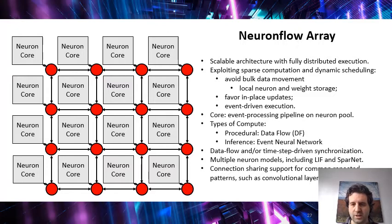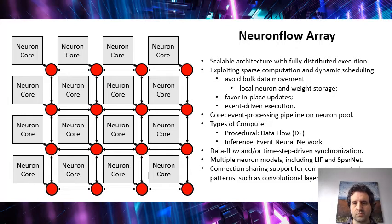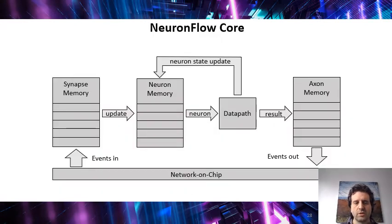Which leads us to the architecture that we propose — an array, like other neuromorphic architectures. We have a bunch of neuron cores. Each neuron core is an event processing machine. And these neuron cores communicate with each other by sending events to each other. Each neuron core receives events, queues them, and starts processing them one by one.